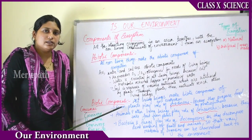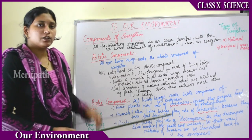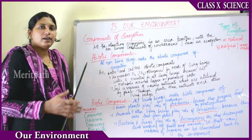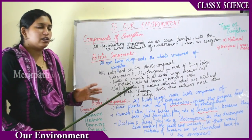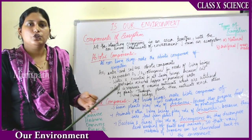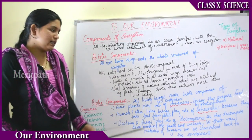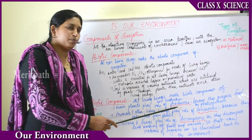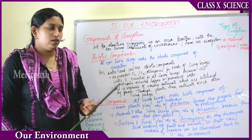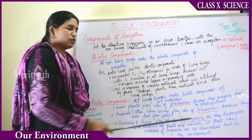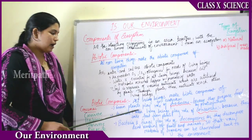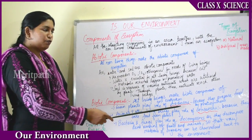Moving on to biotic components: all living beings make up the biotic component of an ecosystem. The biotic components are producers, consumers, and decomposers. Green plants and algae play the role of producers because they prepare their own food by photosynthesis — that is the reason they are known as producers.